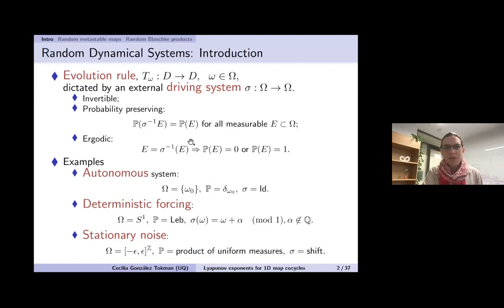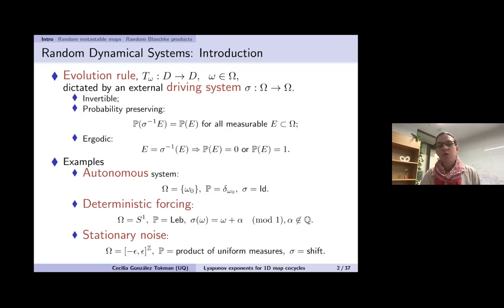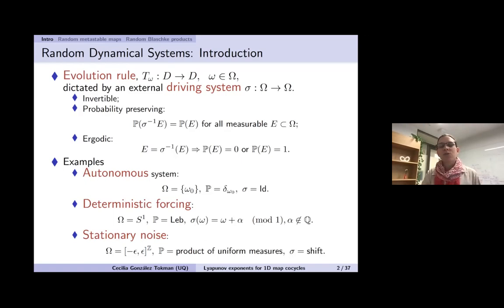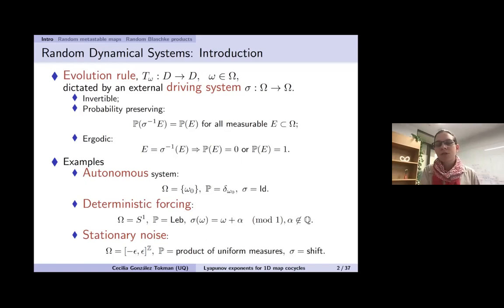Let me start by saying a few words about the general context and motivation for this work. We'll be talking about compositions of discrete time maps T omega, where D will be the interval or the circle. The way in which we choose the map we compose at each step depends on the state of a system external to what we're observing — this is what we call the driving system, Sigma.